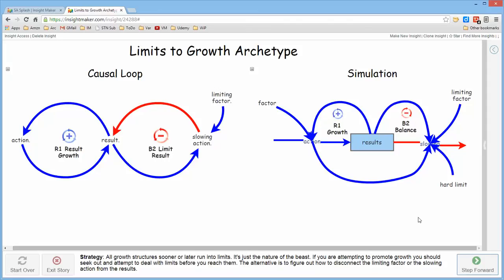The best approach to take is if you establish a growing structure that's doing exactly what you want it to do, the best thing is to go look for limits that it's going to run into before it actually gets there so that you can deal with them and get them out of the way so that the growth structure can continue to grow beyond that.